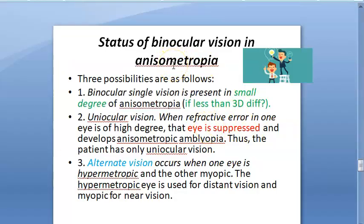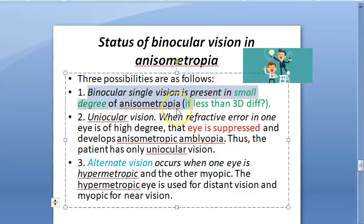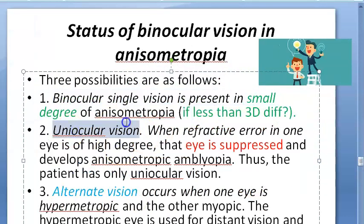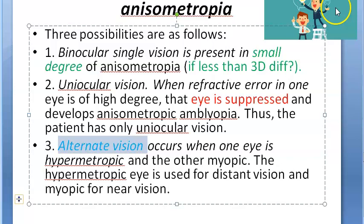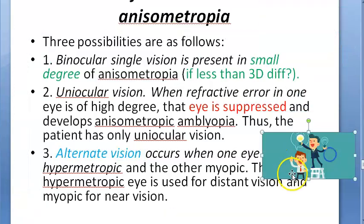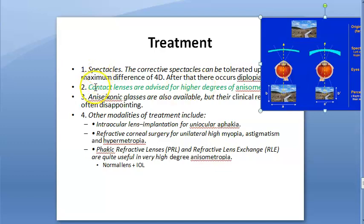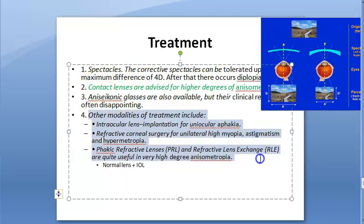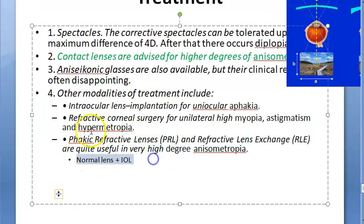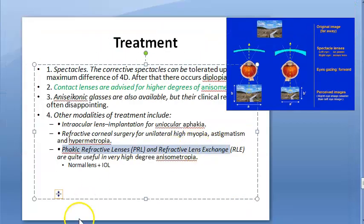Binocular vision can be single binocular if power difference is small; otherwise in children, the bad image gets suppressed leading to uniocular vision. Alternate vision occurs when the myopic eye is used for near and the hypermetropic eye for distance. Diagnosis involves checking for defective vision. Treatment: spectacles, contact lenses preferred, anisokonic glasses (disappointing), intraocular lens, LASIK, or refractive lens exchange. Correct anisometropia in children to prevent amblyopia.